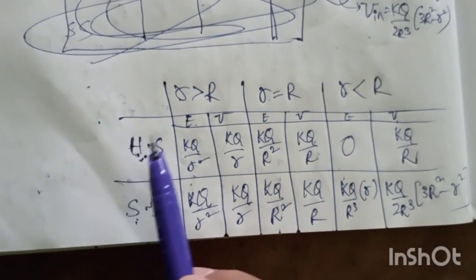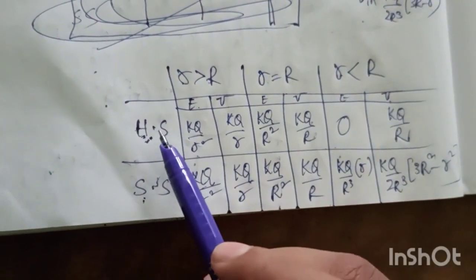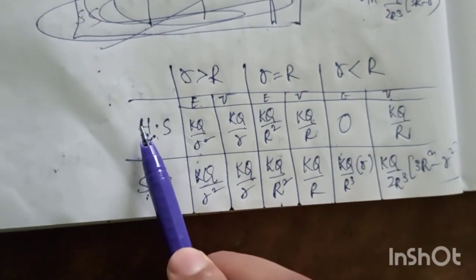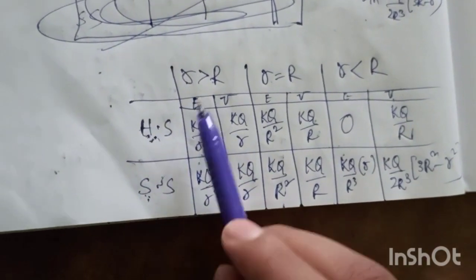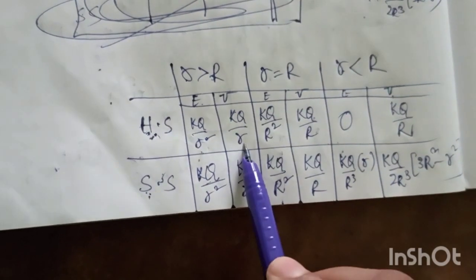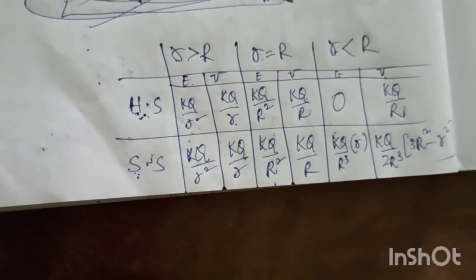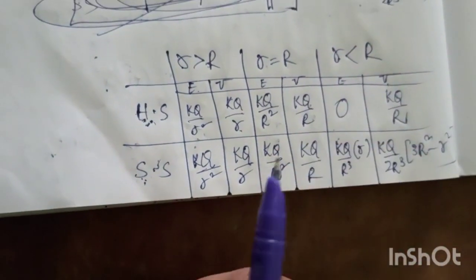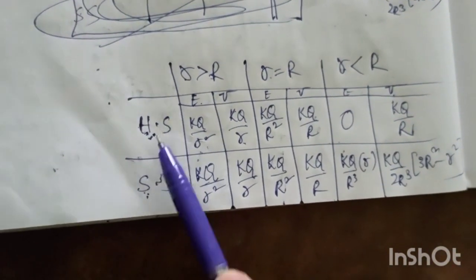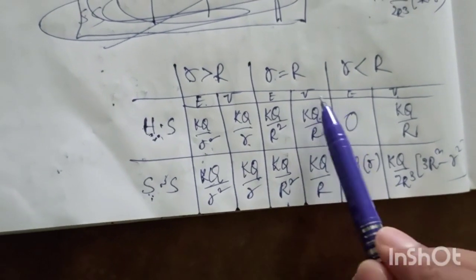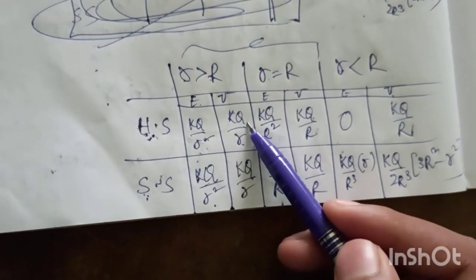In the tabular form, there are three rows: r greater than R, r equal to R, and r less than R. There are two columns: hollow sphere which is a conducting sphere, and solid sphere which is a non-conducting sphere. The formulas kQ by R squared and kQ by R are the same for both in the outside and surface cases.